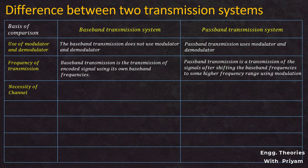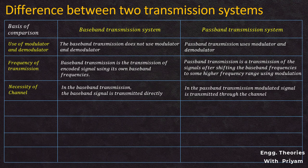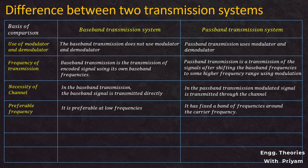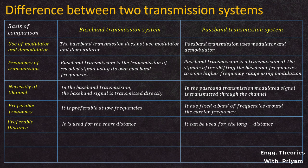Regarding necessity of channel: in baseband transmission, the signal is transmitted directly without any channel; in passband transmission, the modulated signal is transmitted through a channel. Regarding preferable frequency: baseband transmission is preferable at low frequencies, while passband transmission operates at a fixed band of frequencies around the carrier frequency. Regarding preferable distance: baseband transmission is used for short distances, and passband transmission is used for long distances.